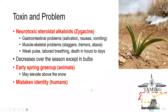The problem in death camas is the zygosine alkaloid — a neurotoxic steroidal alkaloid. It can cause problems of the GI system, including salivation, nausea, and vomiting, but also problems of the muscle and skeletal systems, including staggers, tremors, and ataxia, which is a general loss of control. Affected animals can have a weak pulse, labored breathing, and death can be pretty rapid within hours to days.